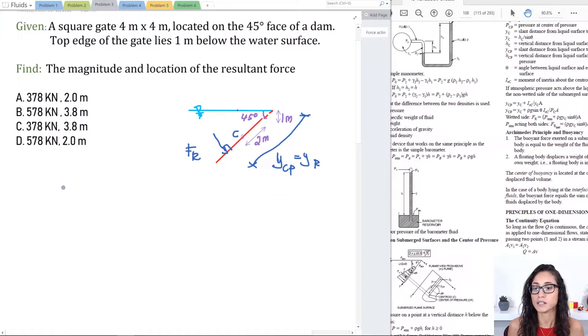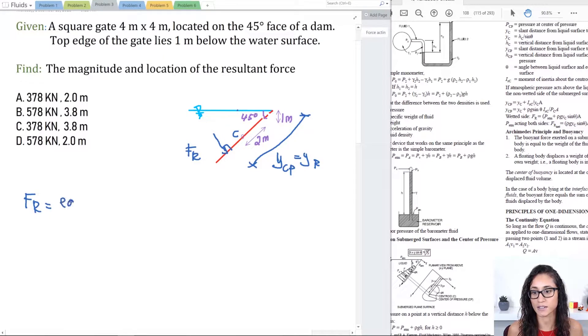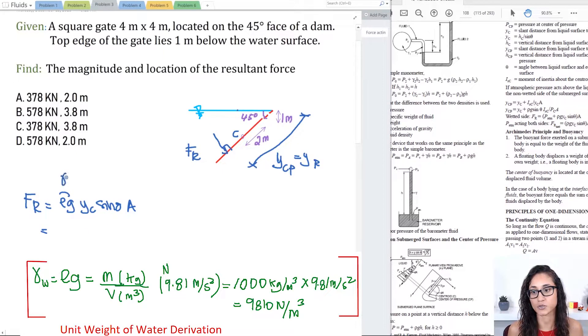Okay so let's first calculate FR. The resultant force equation is on page 109. We have the density times G times YC sine theta times the area. I like to replace this by the unit weight of the water. So we have 9.81 kilonewtons per cubic meter.